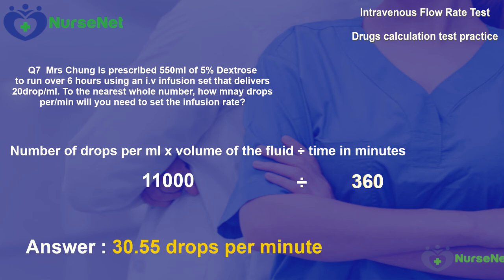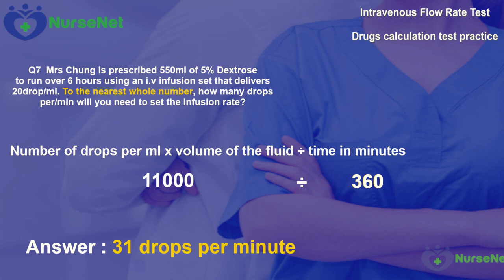20 multiplied by 550 gives us 11,000. Dividing 11,000 by 360 minutes gives us 30.55 drops per minute. The question asks for the nearest whole number, so rounding up gives us the answer of 31 drops per minute.